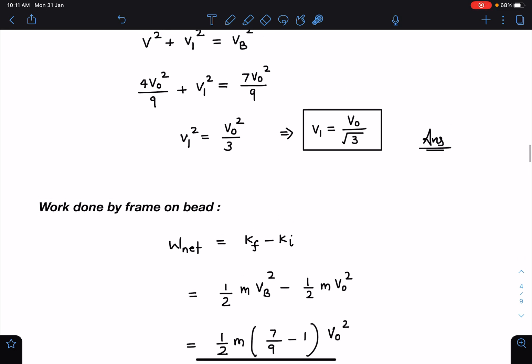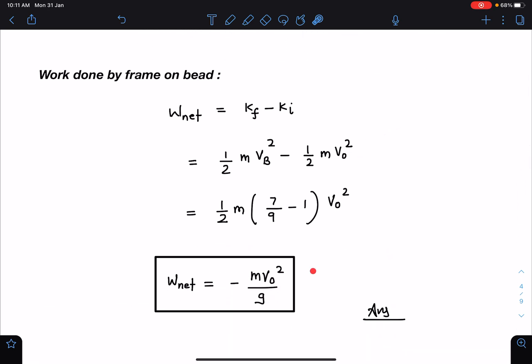Now here, w net is equal to change in kinetic energy. You can see here half m vb square, that is velocity of bead, minus half m v0 square, initial kinetic energy of bead I have to consider. I am calculating on each bead, so only once, not taking the factor of 2 here. When I substitute the values, I am getting w net is equal to minus m v0 square by 9.